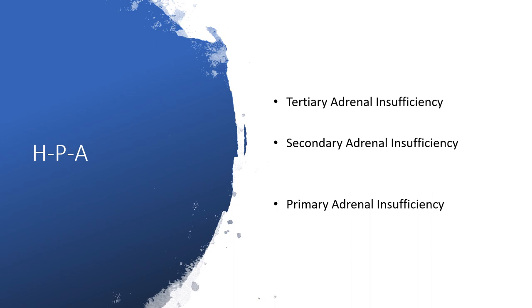In the neuroendocrine system, we'll be addressing the hypothalamic-pituitary-adrenal axis here. We'll be talking about tertiary Adrenal Insufficiency if the problem is within the hypothalamus, and secondary Adrenal Insufficiency if there's a problem with the pituitary gland, particularly the anterior pituitary. But Addison's Disease is limited to primary Adrenal Insufficiency — that is the adrenal gland on top of the kidney.